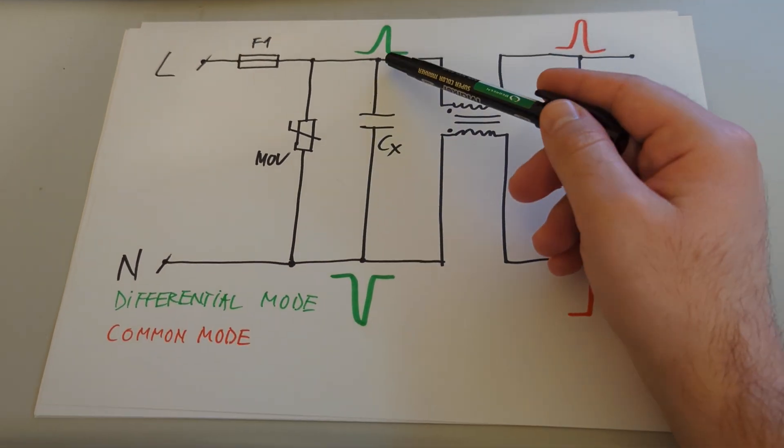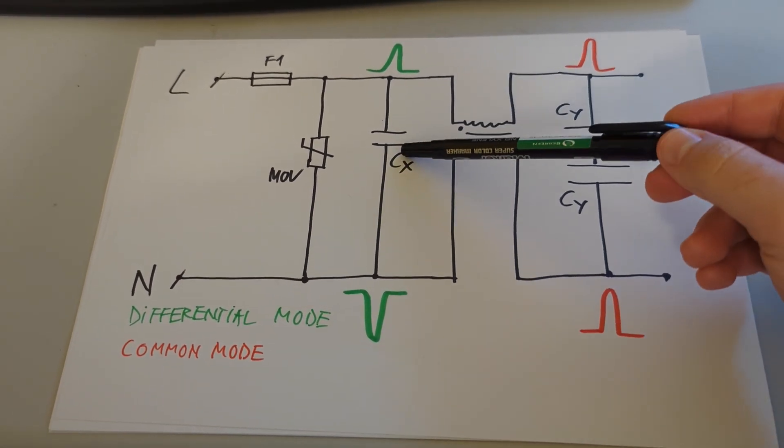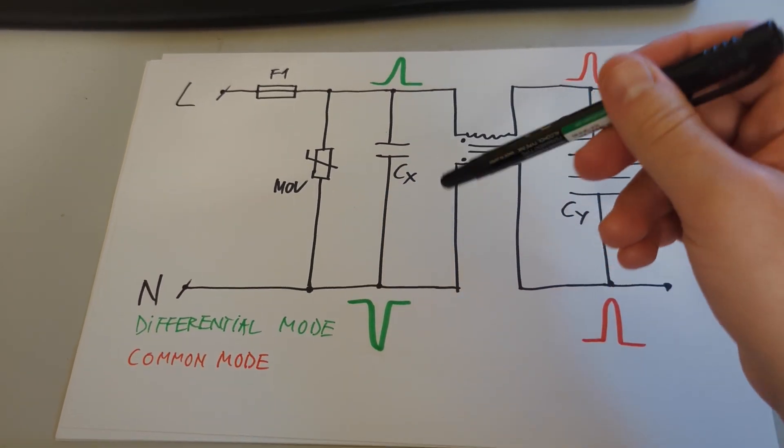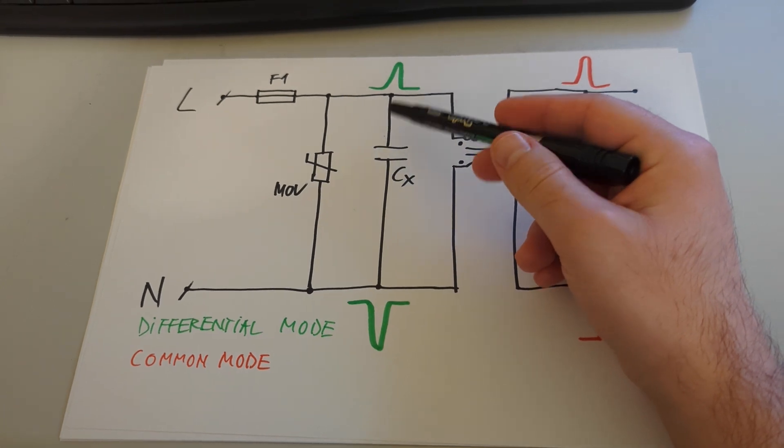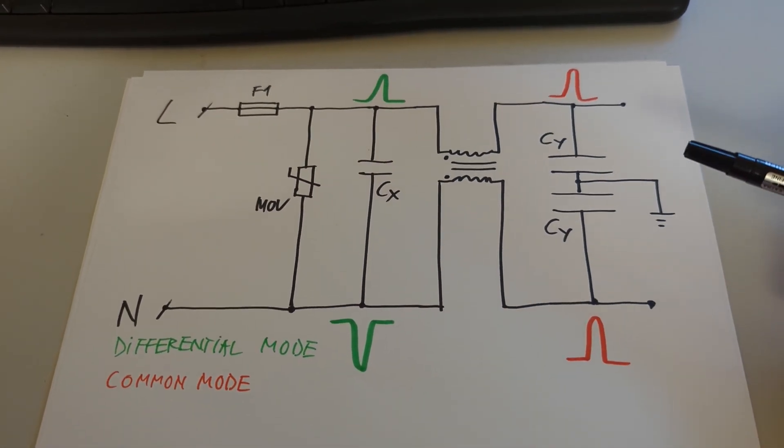the class X safety capacitor takes care of that because at high frequency, this one looks like dead short or in theory, that's what it is supposed to do.